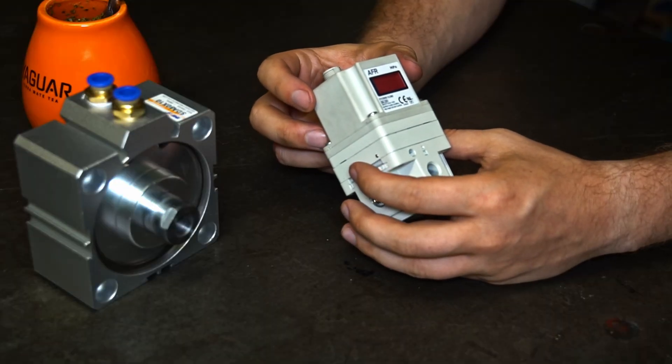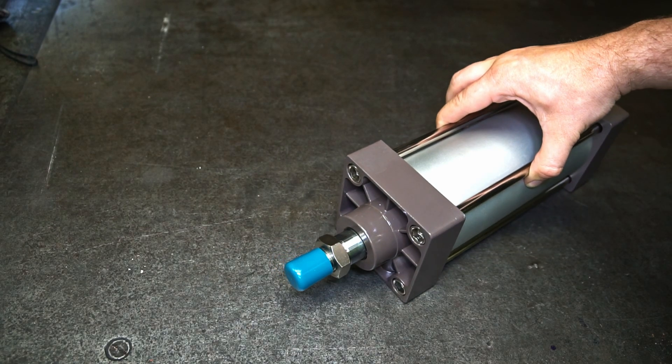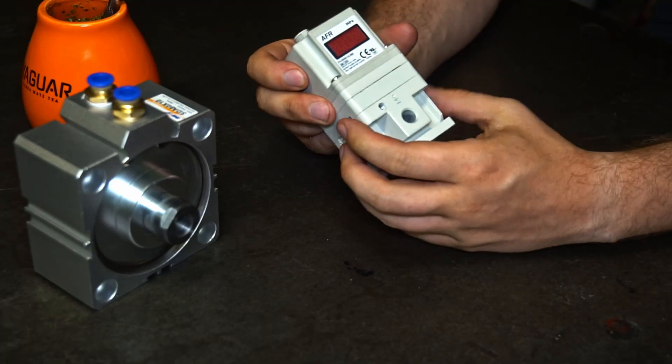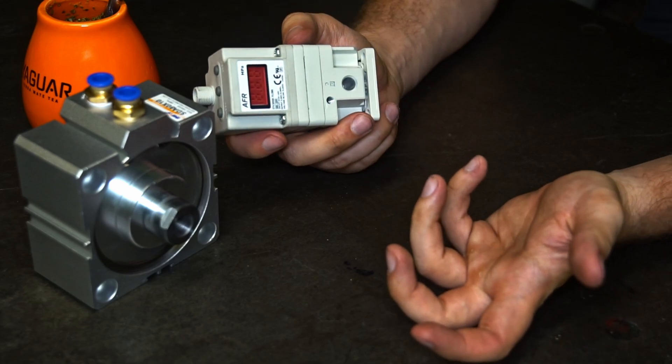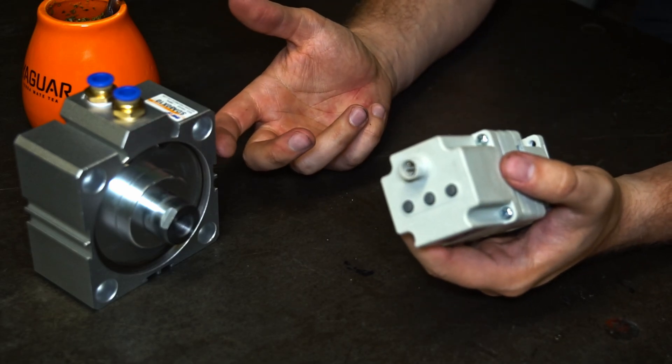My application for this regulator will be a tail stock air cylinder in my CNC lathe I'm building right now. I want to be able to change the force it will be generating between 0 and somewhere about 400 kg. I guess I'm fine with that.